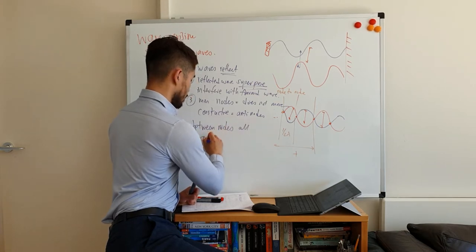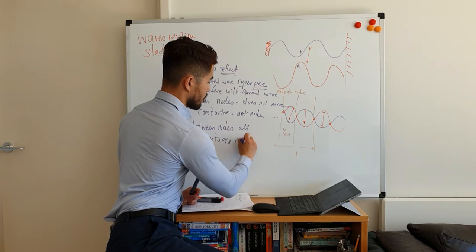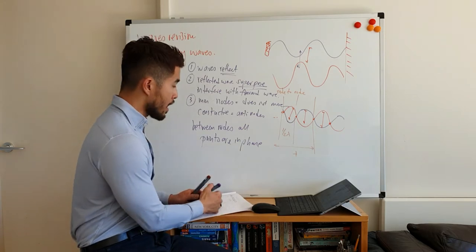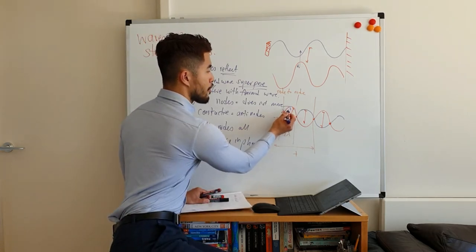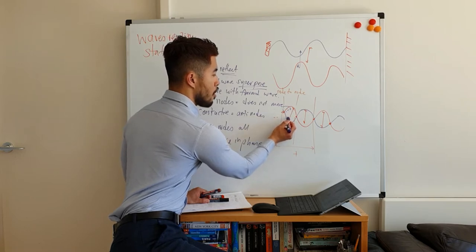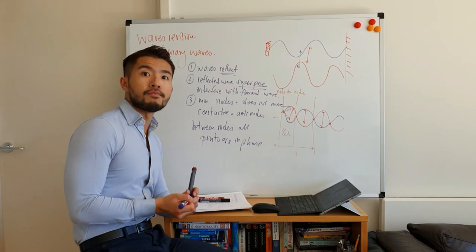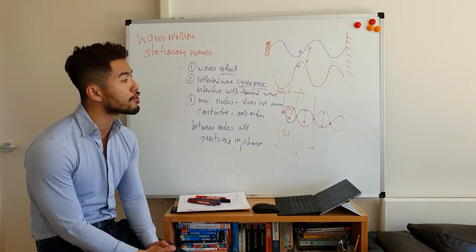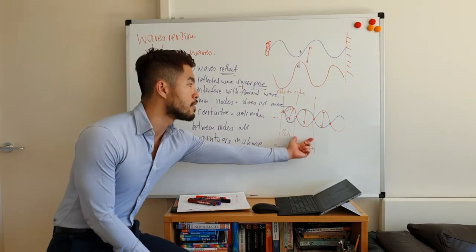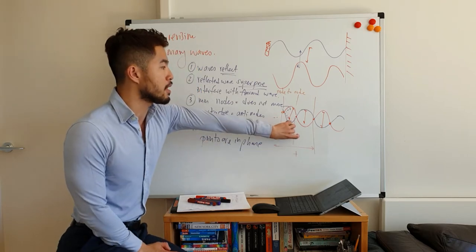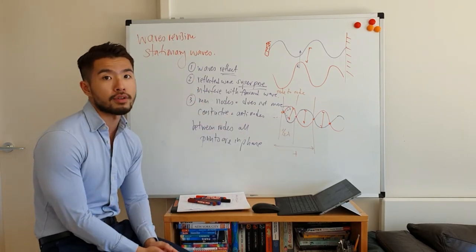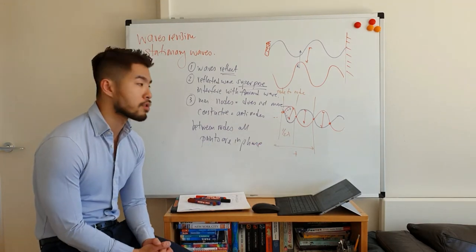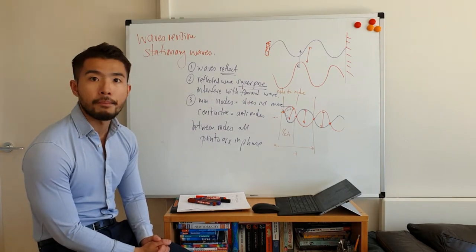Between the nodes, all points are in phase. That means if this point, this point, and this point are all moving downwards together, they are all at the same point in their wave cycle. This only happens with standing waves. The phase difference between adjacent sections — one loop to the next — is pi or 180 degrees; they are in anti-phase. But within a single loop, the phase difference is zero.